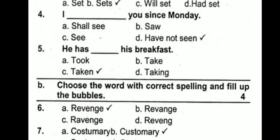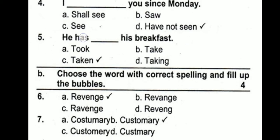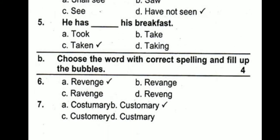'He has dash his breakfast.' With 'has,' we always use the third form of the verb. The only option with the third form is 'taken.' With has, have, and had, we always use the third form of the verb. We also use the third form in passive voice. So the answer is 'he has taken his breakfast.'